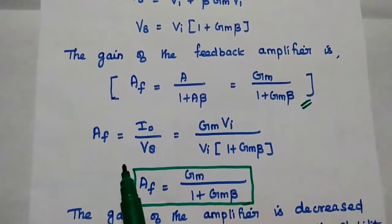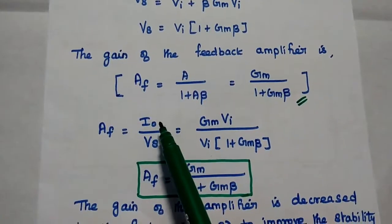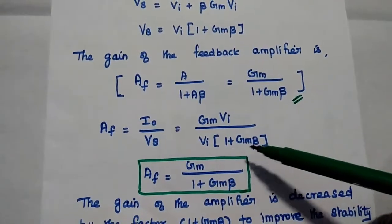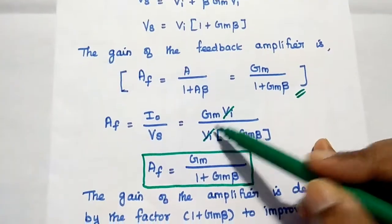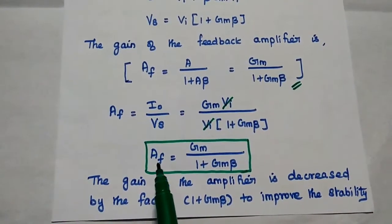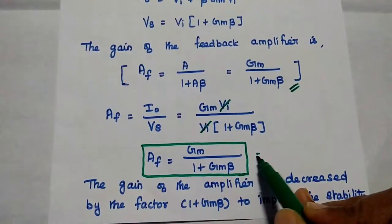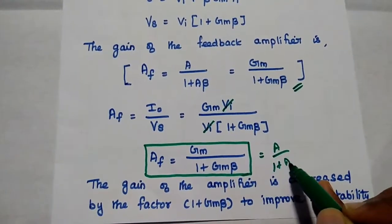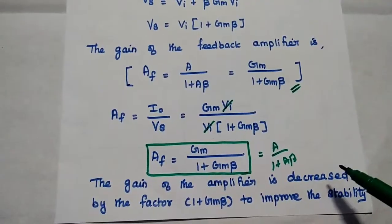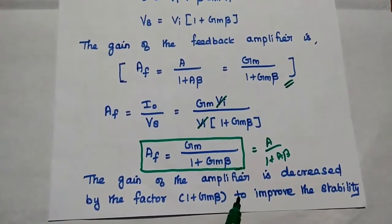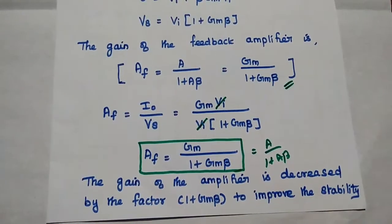We obtain this value by substituting the Vs term in the formula. The gain with feedback is equal to IO by Vs. Vs is nothing but Vi into 1 plus Gm beta, and IO is equal to Gm into Vi. The Vi terms cancel, and we get the gain of the feedback amplifier AF is equal to Gm by 1 plus Gm beta. This can also be written as A by 1 plus A beta. The gain of the amplifier is decreased by the factor 1 plus Gm beta to increase the stability of the feedback amplifier.